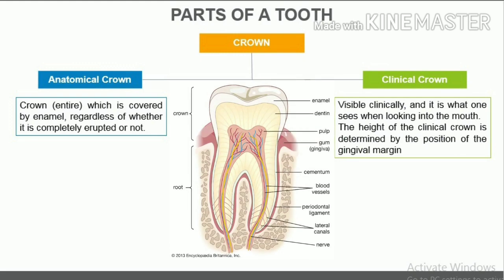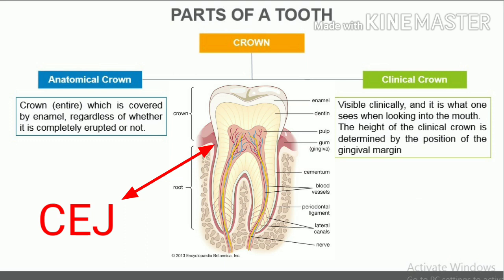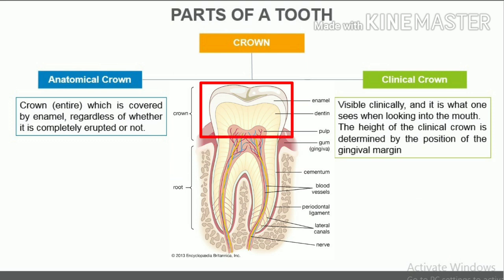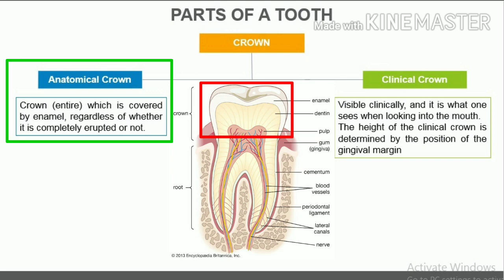Parts of a tooth. Each tooth has two parts — crown and root — separated by a cervical line or cementoenamel junction. The crown is the portion of the tooth covered by enamel. The anatomical crown refers to the entire crown covered by enamel, regardless of whether it is completely erupted or not. The size of the anatomical crown remains constant throughout the lifetime of the tooth, except in cases of attrition or any other physical wearing of the tooth surface.